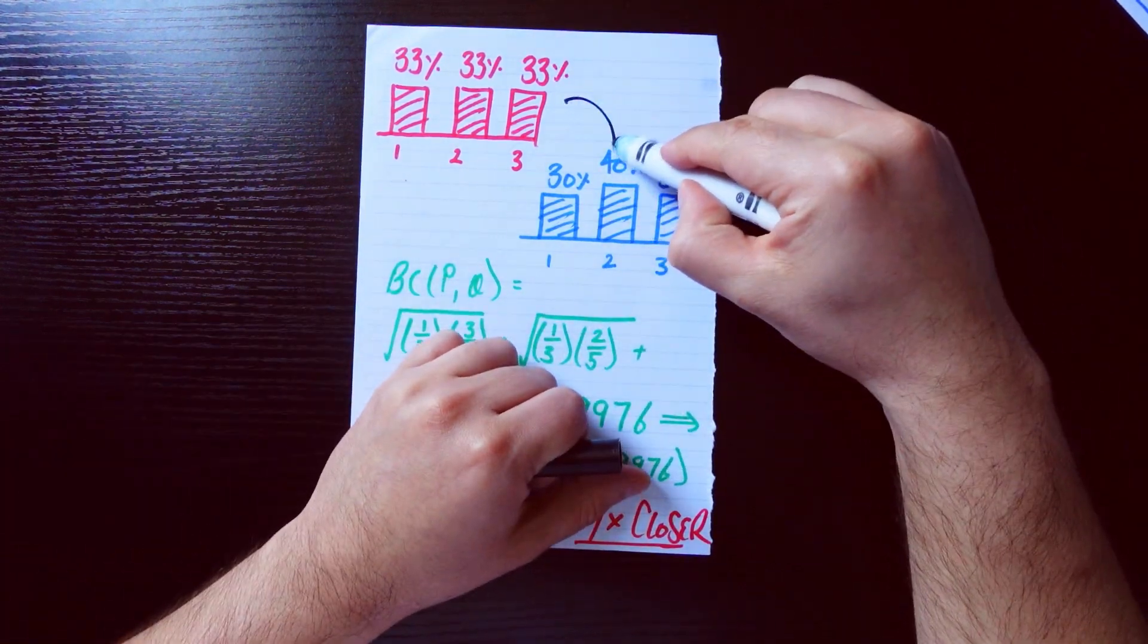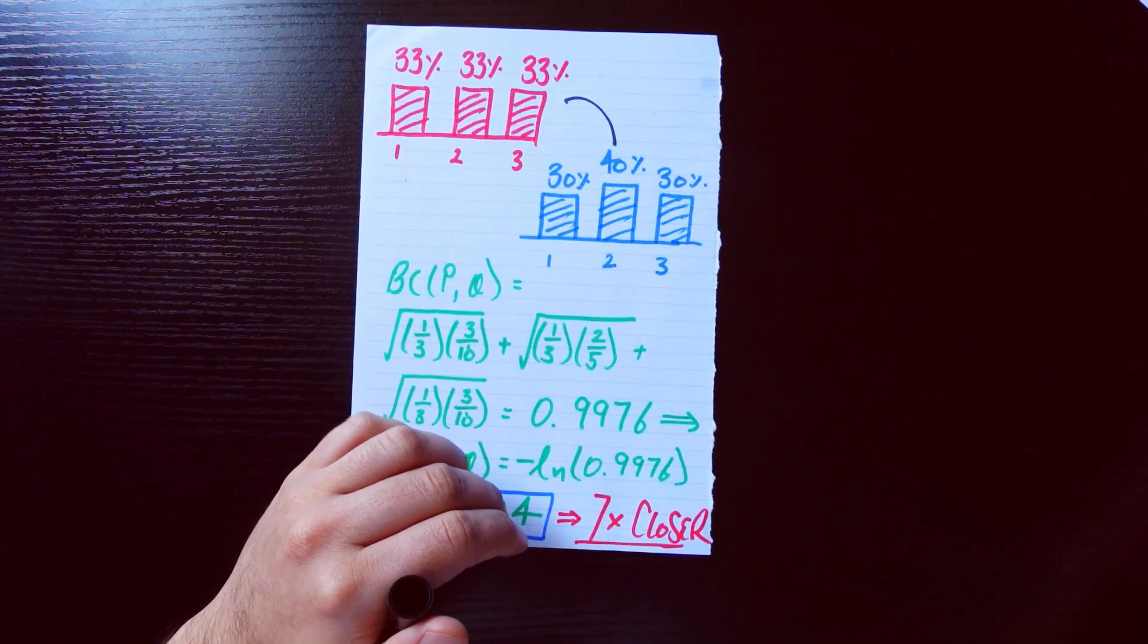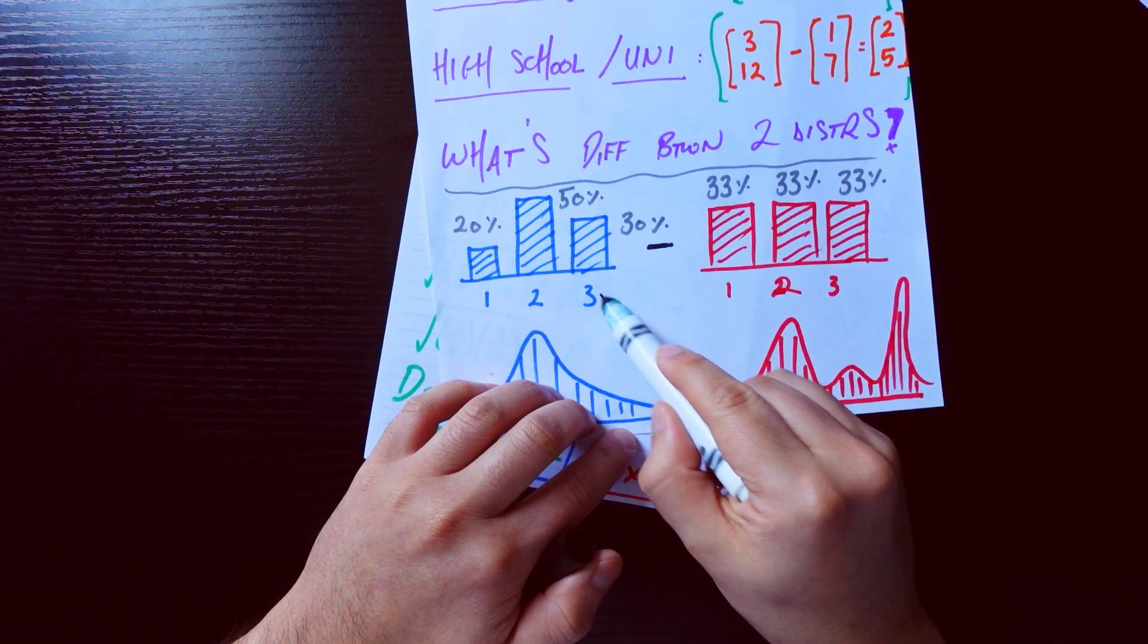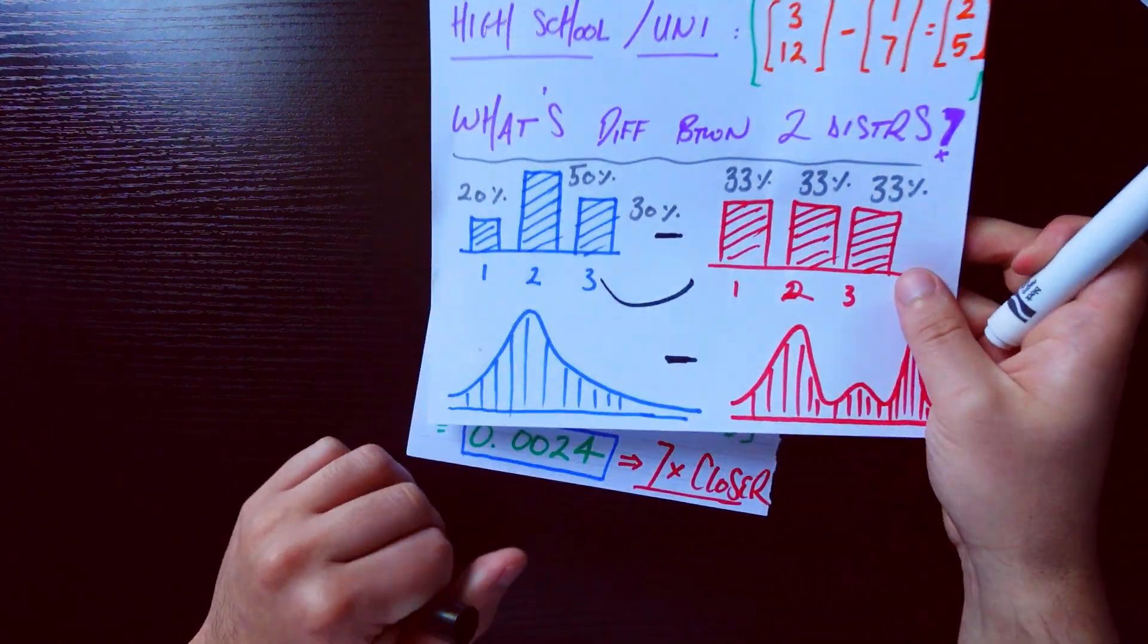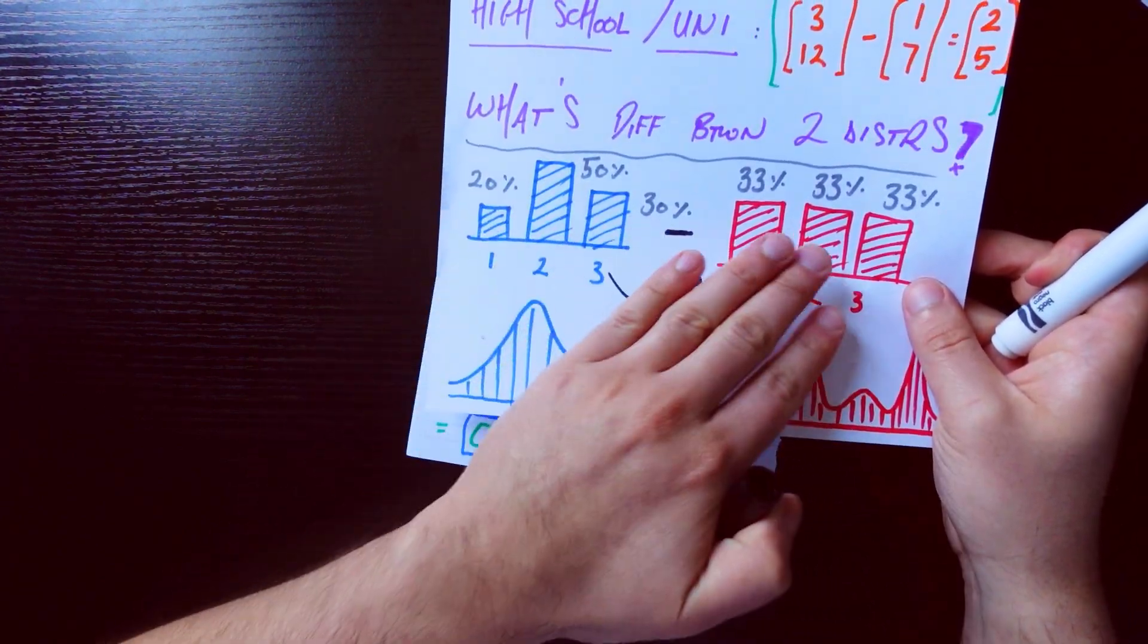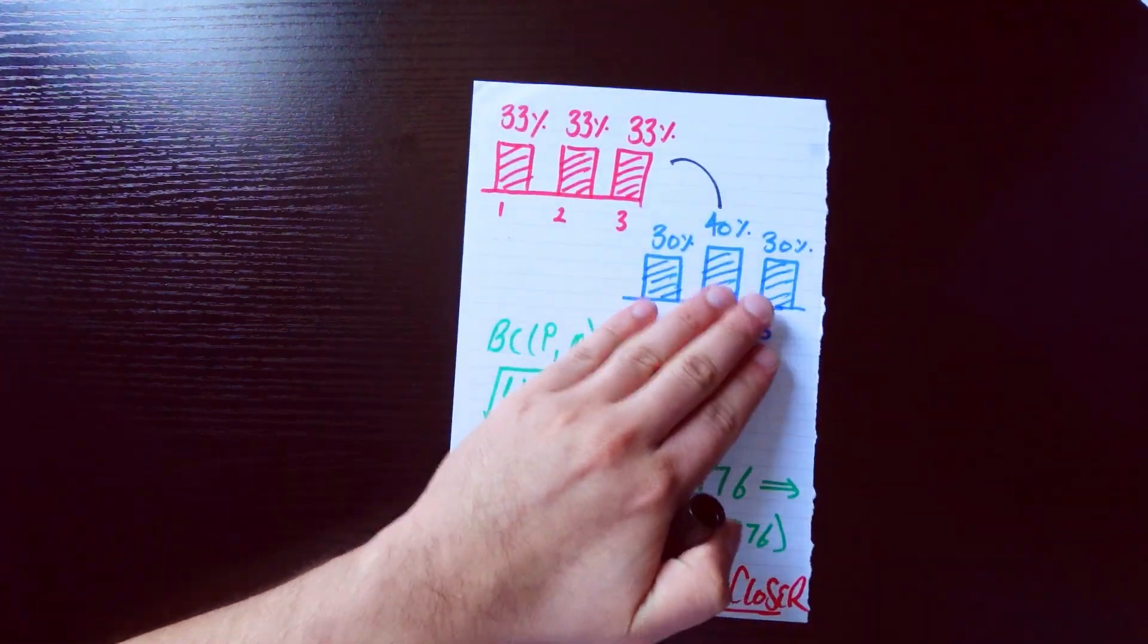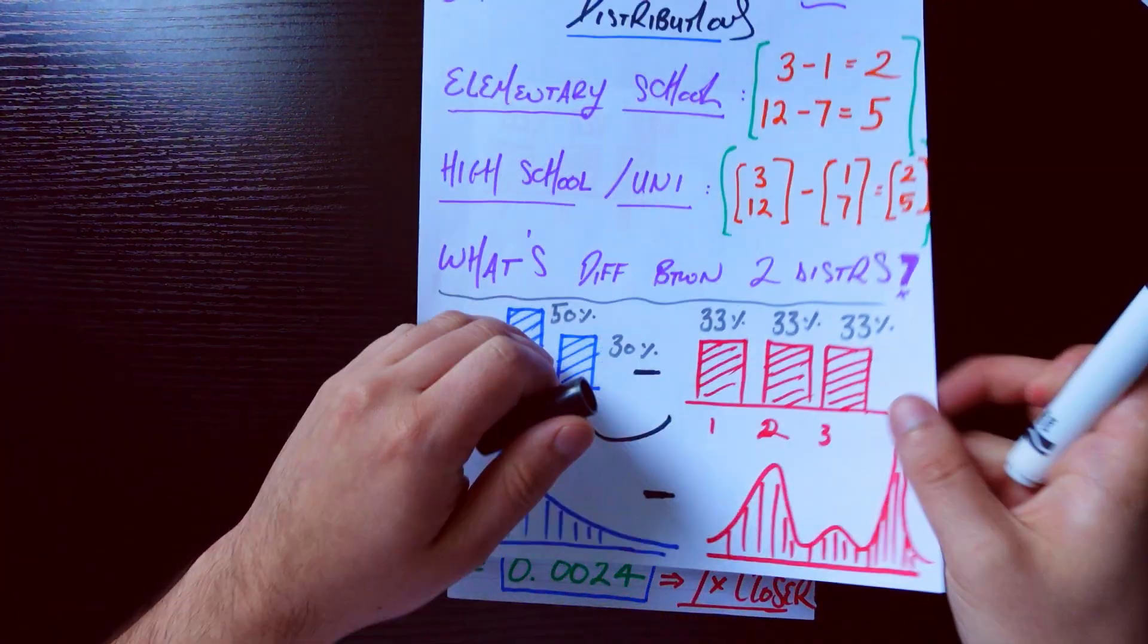Whereas before it was 0.0175, and now we get it seven times closer. So under this metric we just talked about, these two distributions are seven times closer together than these two distributions. Not kind of fundamentally makes sense—these numbers don't seem as close to these numbers as these guys do.